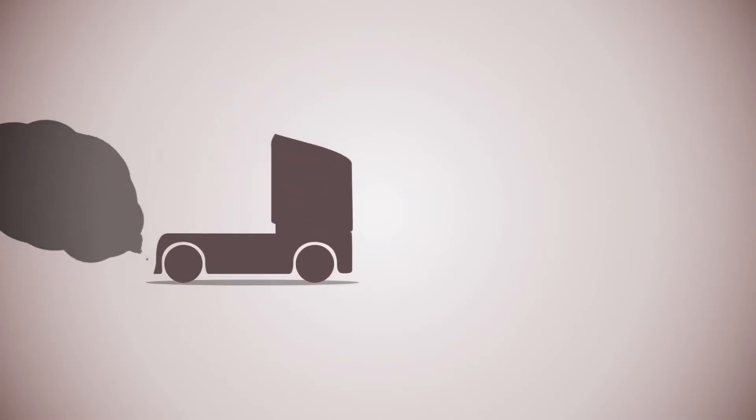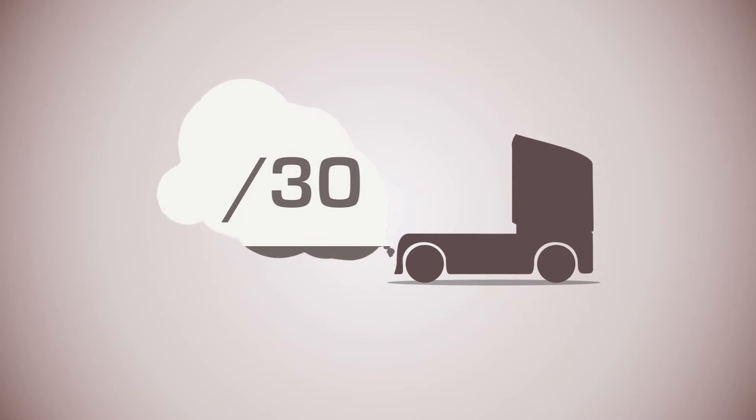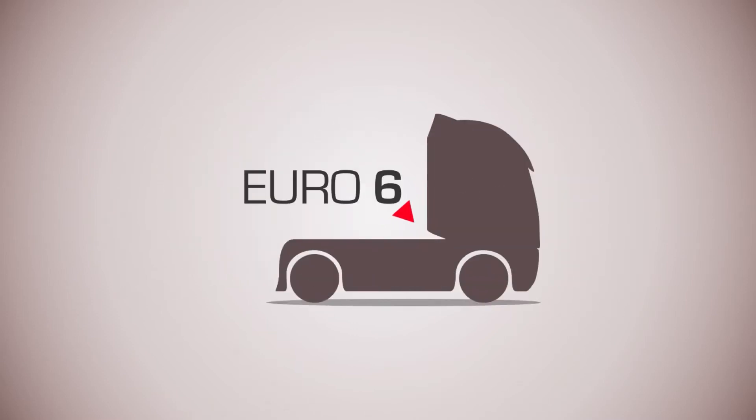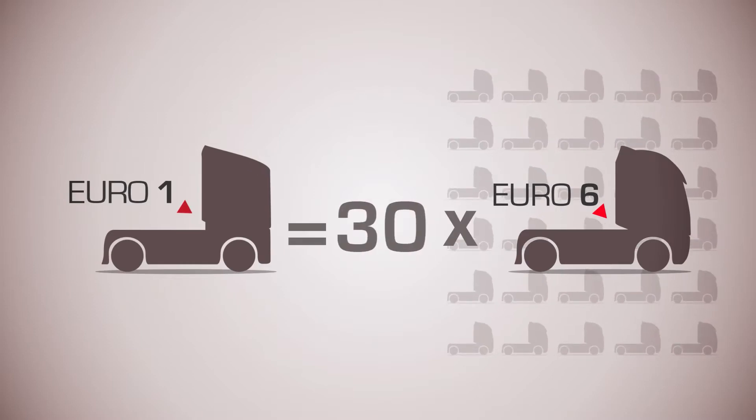Over the past 20 years, regulatory requirements have enabled particulate emissions from diesel engines to be reduced 30-fold. The pollutant emissions per kilometer from one Euro 1 vehicle are equivalent to 30 Euro 6 vehicles today.